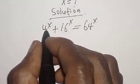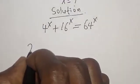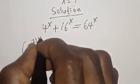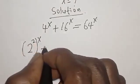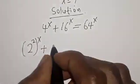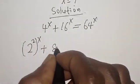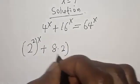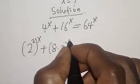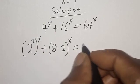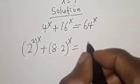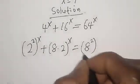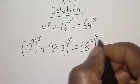4 raised to power s is 2 squared raised to power x, plus 16 is 8 multiplied by 2 raised to power x, is equal to 64, which is 8 squared, raised to power x.